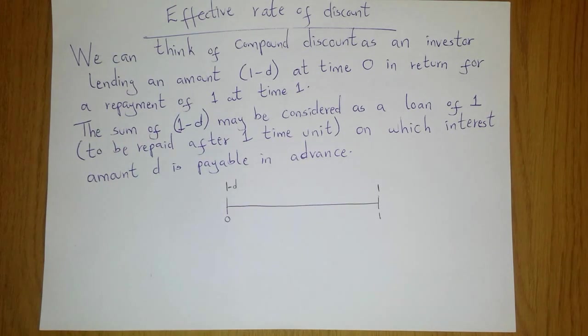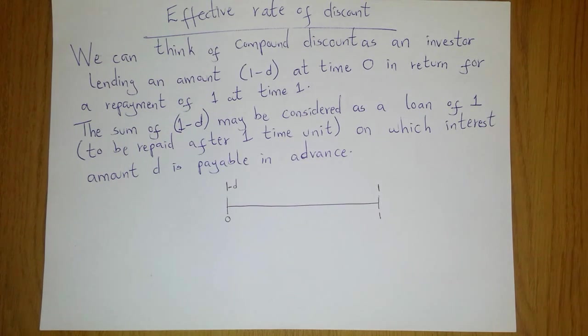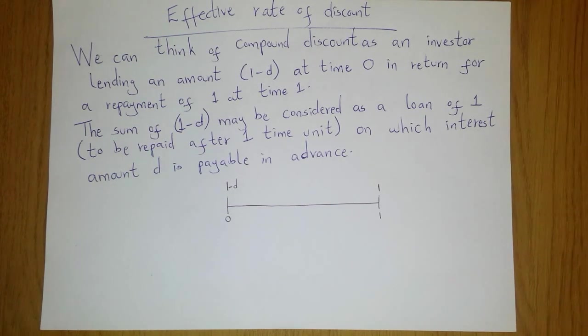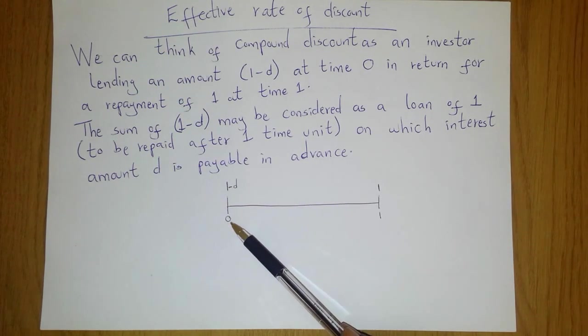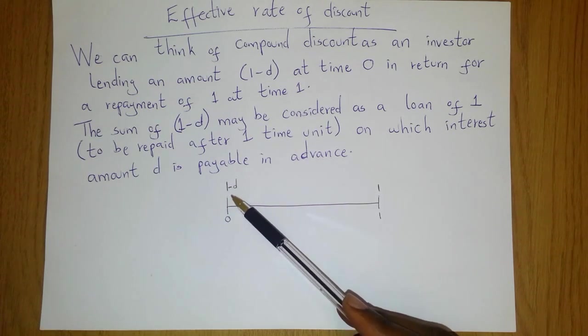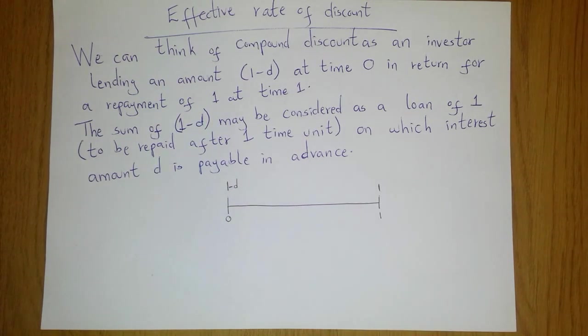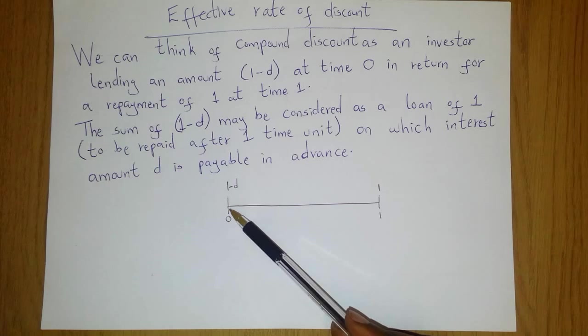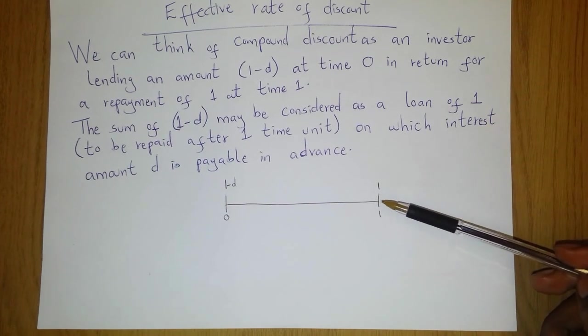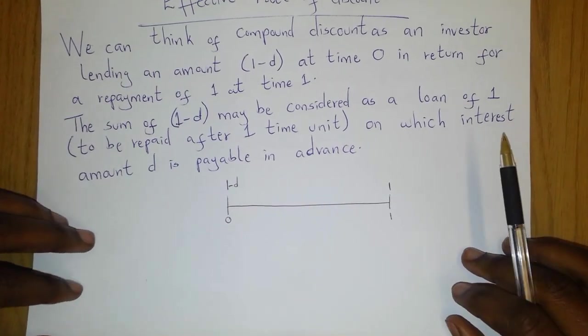In other words, it's a loan of 1 received here, but then since the person has to pay an interest amount of d when they receive the loan here, they're simply left with 1 minus d. Hence it is 1 minus d at time 0 and at time 1 they repay an amount 1.